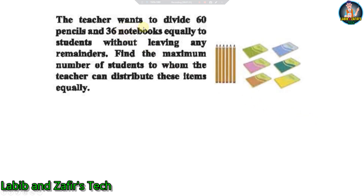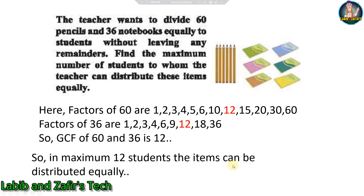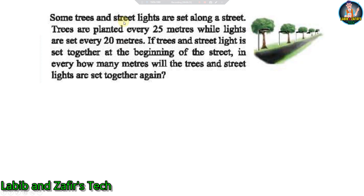Next problem: A teacher wants to divide 60 pencils and 36 notebooks equally among students without any remainder. Find the maximum number of students. Solution: Factors of 60: 1, 2, 3, 4, 5, 6, 10, 12, 15, 20, 30, 60. Factors of 36: 1, 2, 3, 4, 6, 9, 12, 18, 36. The GCF (Greatest Common Factor) of 60 and 36 is 12, so the items can be distributed equally among a maximum of 12 students.